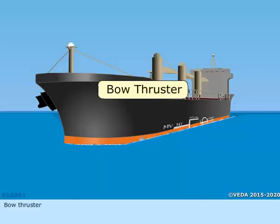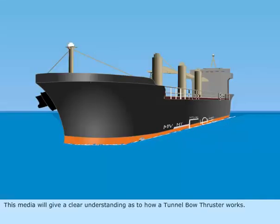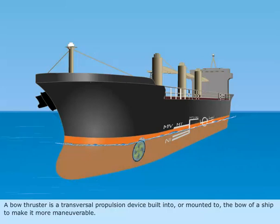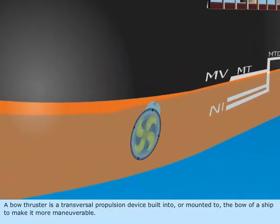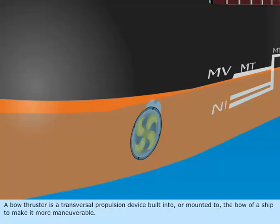Bow Thruster. This media will give a clear understanding as to how a Tunnel Bow Thruster works. A bow thruster is a transversal propulsion device built into or mounted to the bow of a ship to make it more maneuverable.